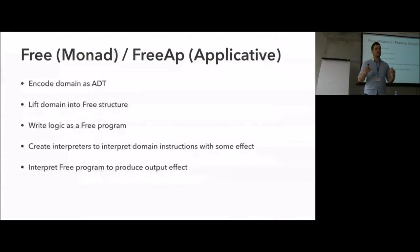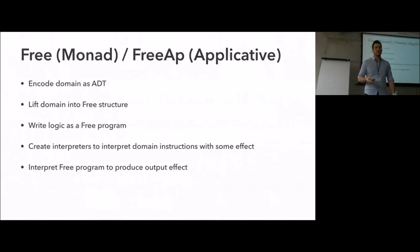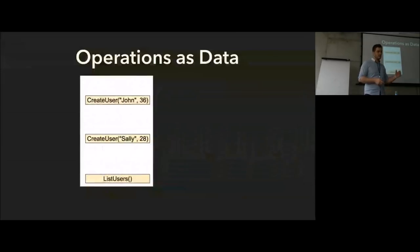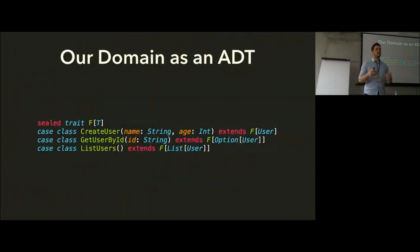At a high level, this breaks down into the following steps: encode the domain as an ADT, lift the domain into a free structure, write the logic as a free program, create interpreters to interpret the domain instructions with some effect, and then interpret the free program to produce the output effect. Starting with encoding the domain as an ADT — creating the operations as data looks something like a sealed trait with case classes representing each one of the methods previously on the trait.